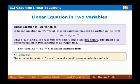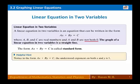A linear equation in two variables is an equation that can be written in the form ax plus by equal to c, where a, b, and c are real numbers and a and b are not both zero. The graph of a linear equation in two variables is a straight line.